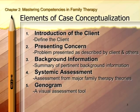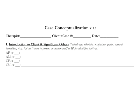So those are the five sections of the case conceptualization covered in this book. Here you can see the first section of the case conceptualization form itself. There's a place for the therapist name, the case or client number, the date, and that first section where you go over age and ethnicity, occupation and grade. AF is adult female, AM is adult male, CF is child female, CM is child male. There are extra lines if your family is configured a bit differently.